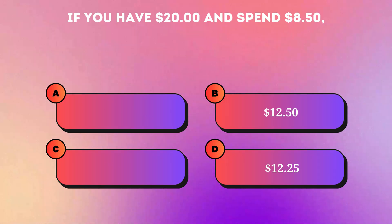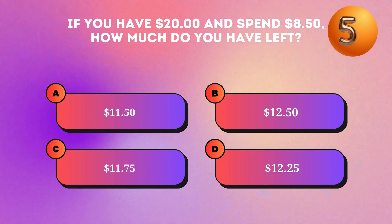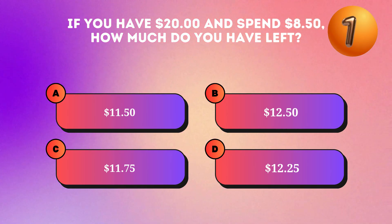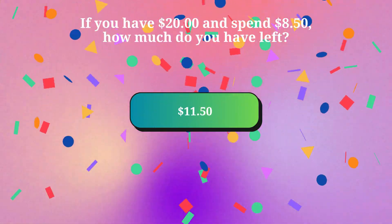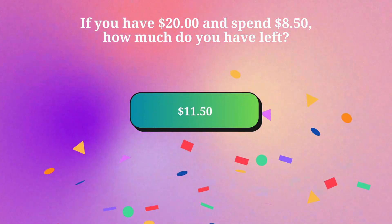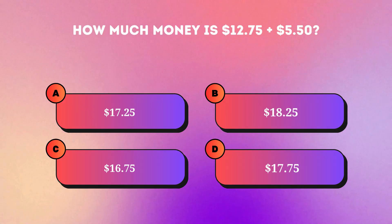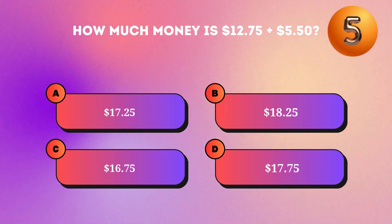If you have twenty dollars and spend eight dollars fifty cents, how much do you have left? Eleven dollars fifty cents. How much money is twelve dollars seventy-five cents plus five dollars fifty cents?